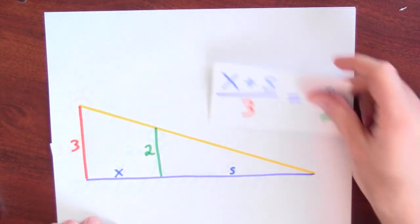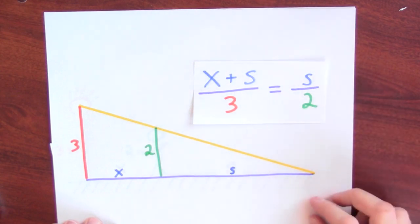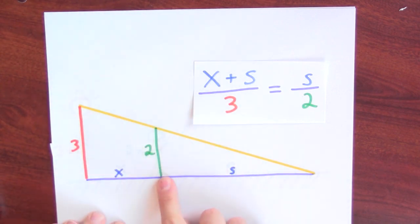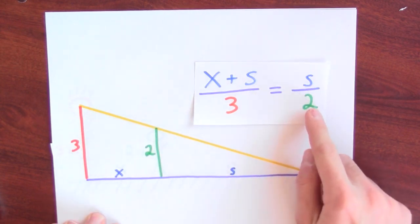And as a result, I get this equation out of the diagram. This distance to this distance, x plus s to 3, must be the same as the corresponding relation to the other triangle, which is this distance to this distance, s over 2.